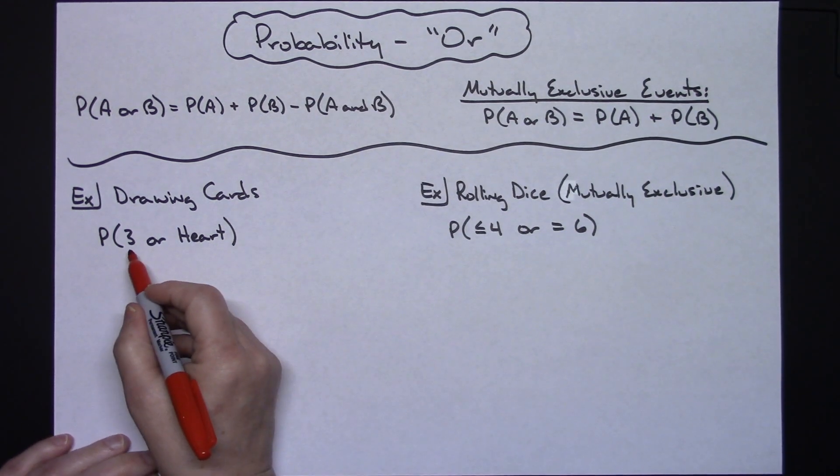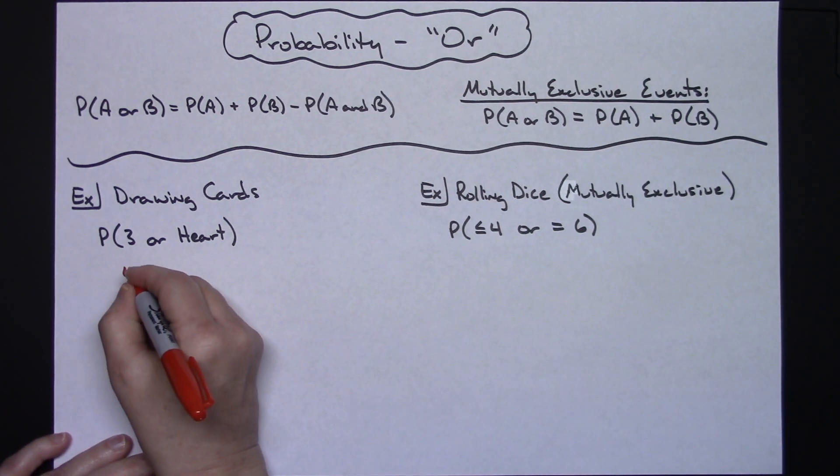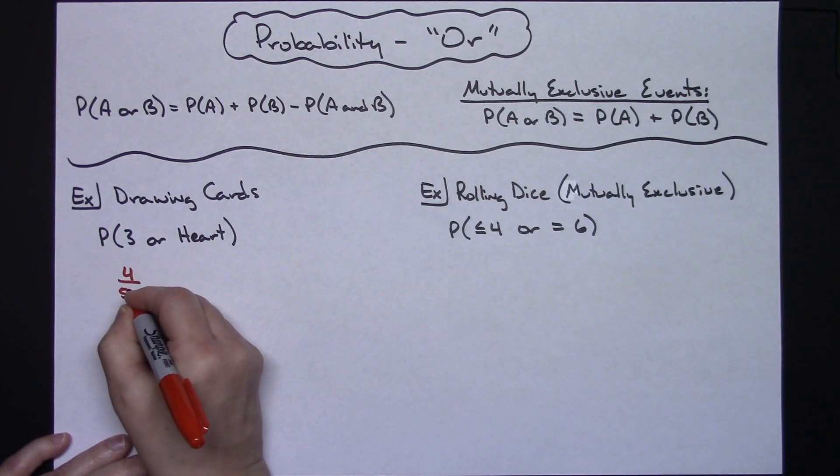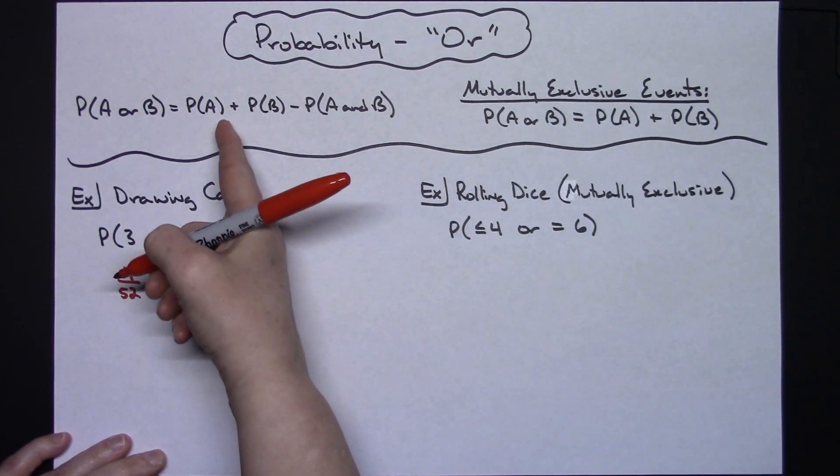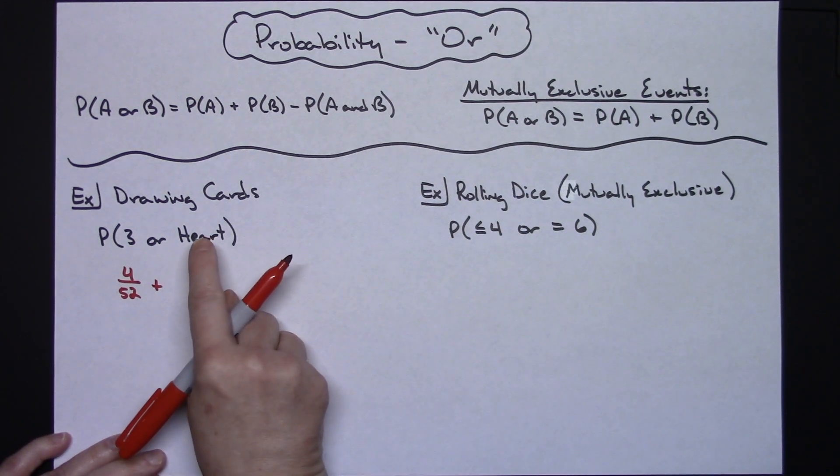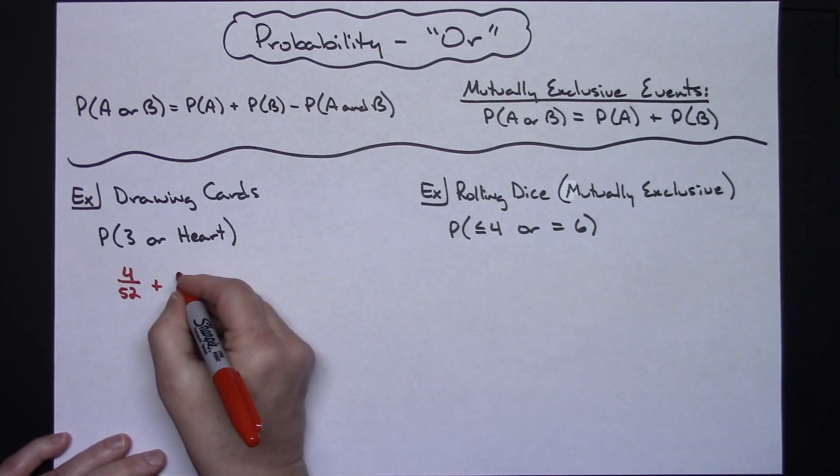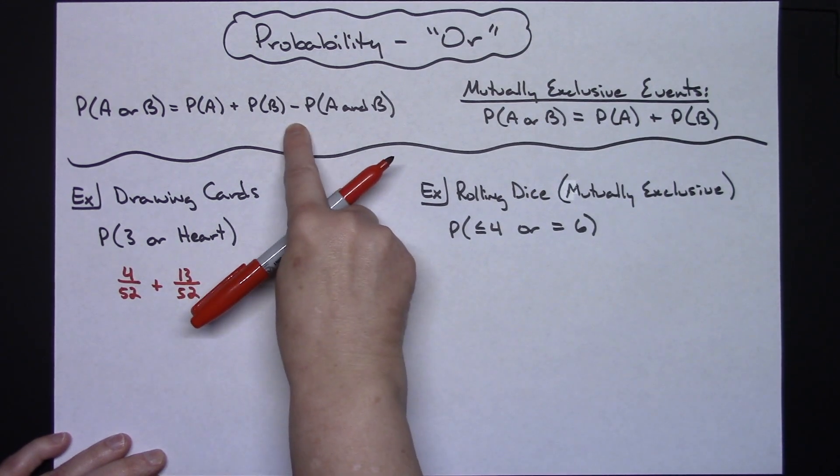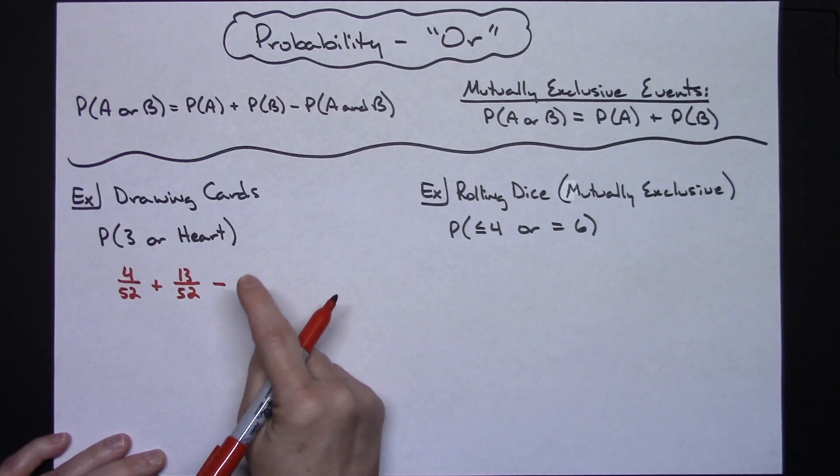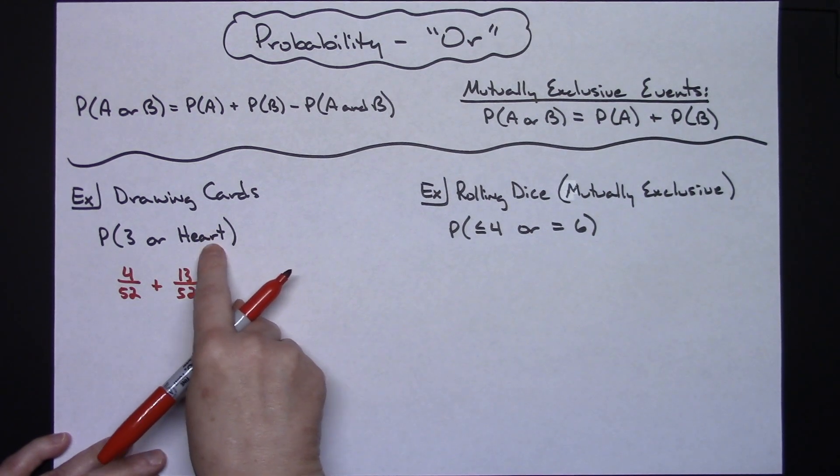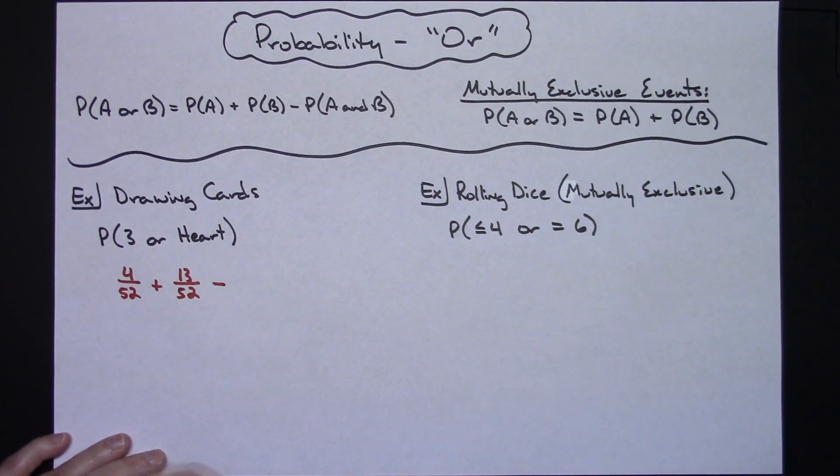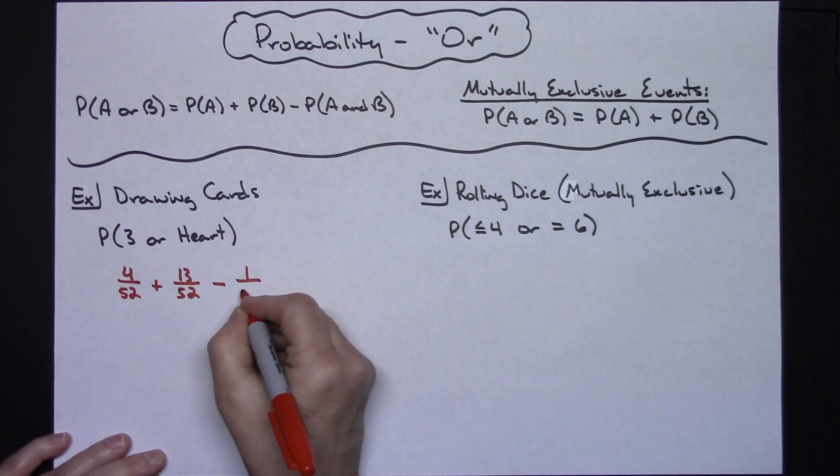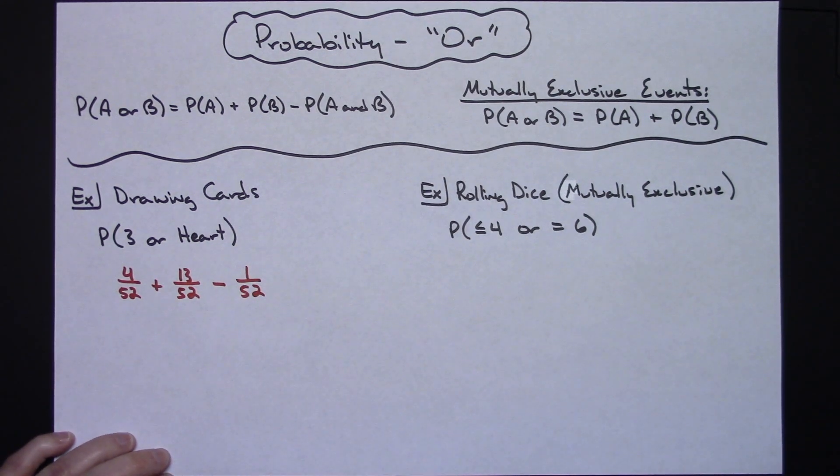So thinking about a deck of cards, how many threes are in a deck of cards? That would be four. So I'm going to have four out of the fifty two cards that are in the deck. Plus the probability of the heart. Well there are thirteen hearts in a deck of cards out of the fifty two total. And then minus, how many three of hearts are there in a deck? There is one. So that would be one over the fifty two.